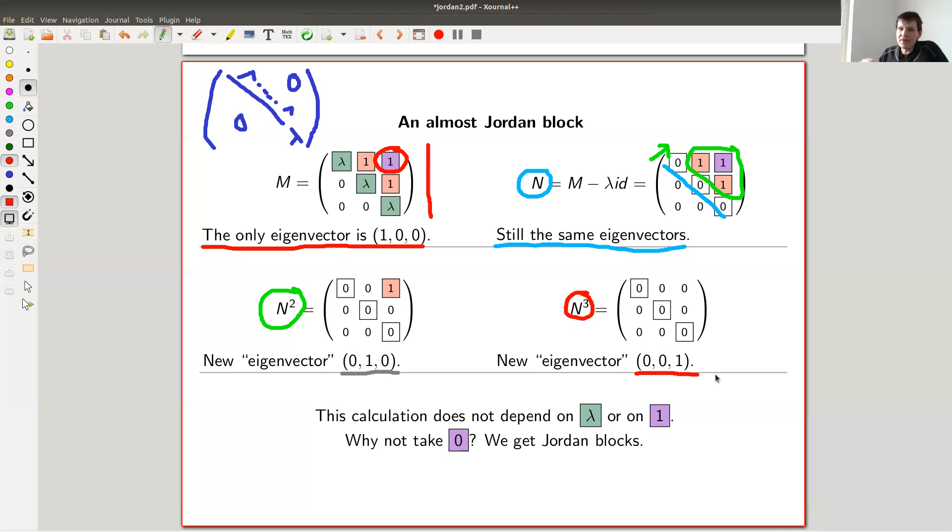So you get this new eigenvector. And the observation you do is this calculation does not depend on lambda, but it also doesn't depend on this purple entry here, right? It really doesn't matter at all. The purple entry already vanishes in the first step. So why not take the purple entry to be zero? And then you get what is called a Jordan block. The same calculation works for any kind of Jordan block. You observe that if you take successive powers of the Jordan block, then you get new eigenvectors.